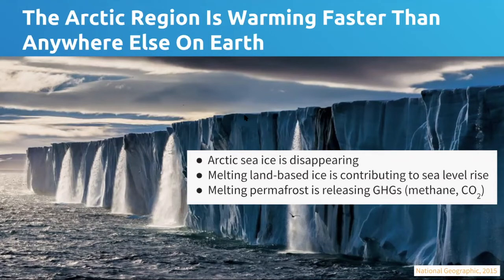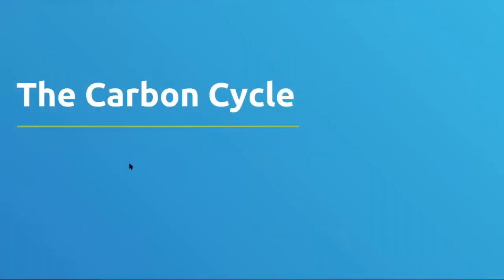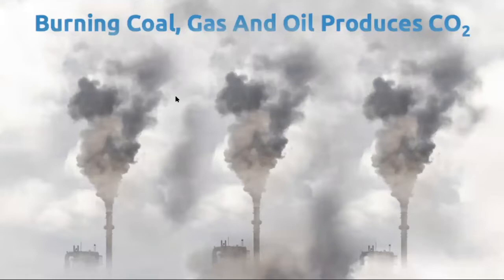These are some of the canaries in the coal mine — we see the impacts of climate change happening fastest in the highest latitudes on our planet. We're going to start with some basics about the carbon cycle and why there's a connection between greenhouse gases like carbon dioxide and our planet's temperature.